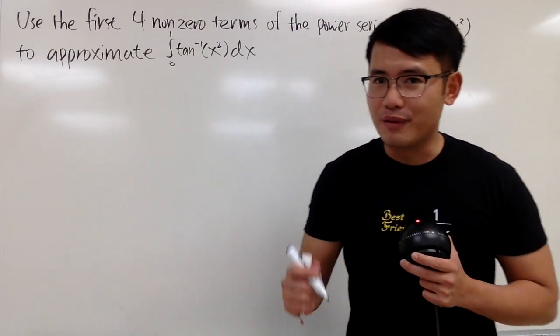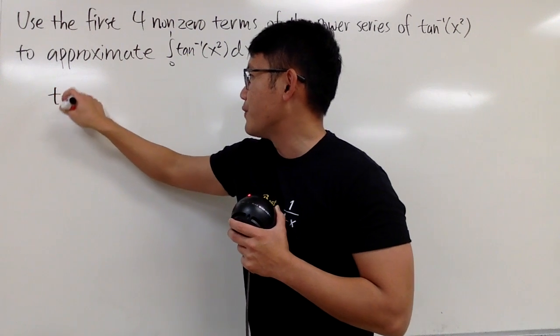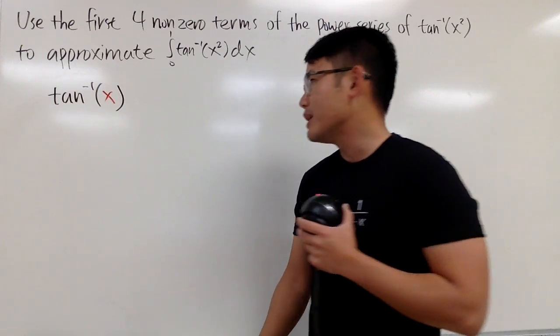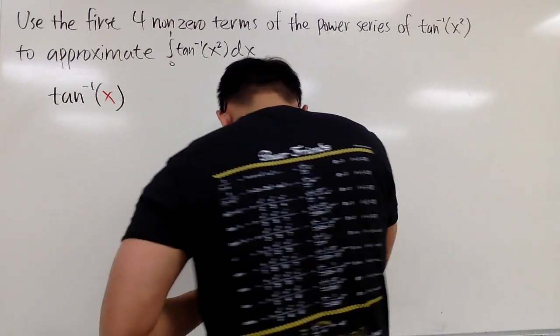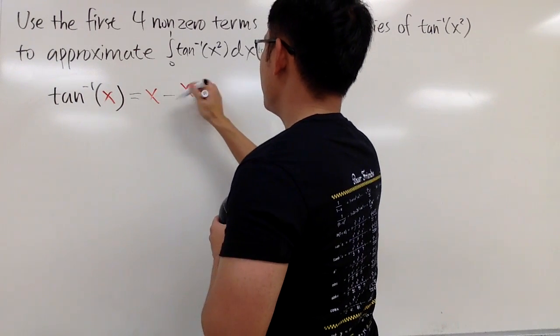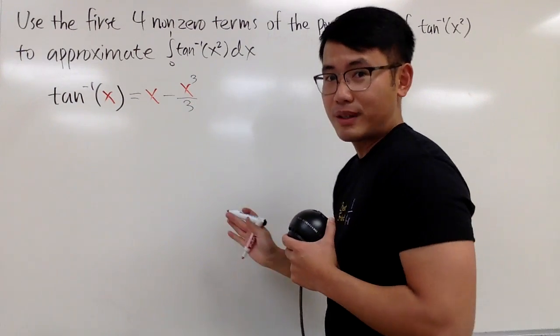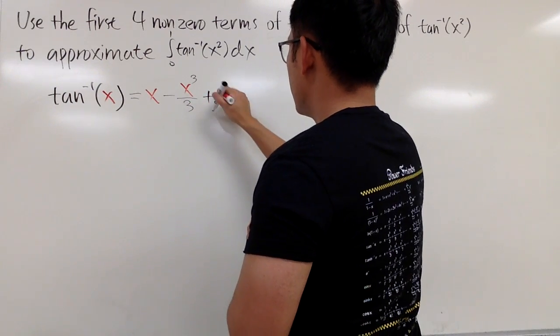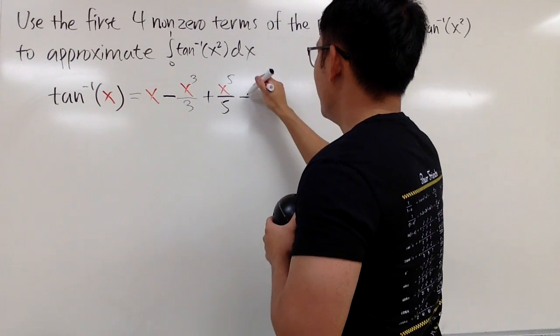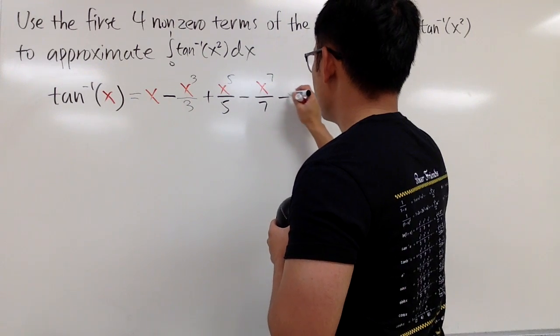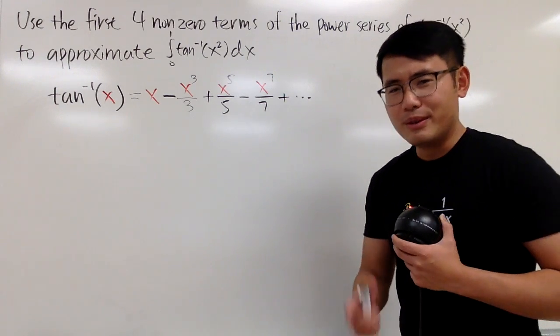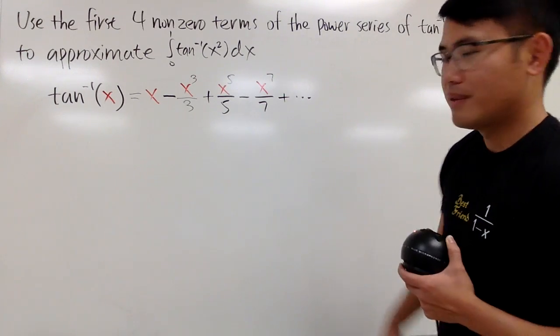Of course, we have to remember our inverse tangent formula first. So let me just write this down right here for you guys, the inverse tangent, and let me just put down x right here for the input for now. I don't remember what this is. I think it's equal to x and then minus x to the 3rd power over 3, and there's no factorial. And then plus x to the 5th power over 5, and then minus x to the 7th power over 7, and then like this. And we just want the first four non-zero terms, so I think this is it. Alright, you guys can leave a comment down below to see if I got this right or wrong.